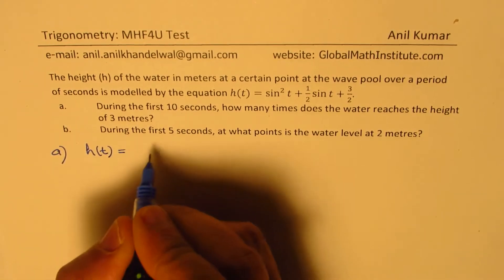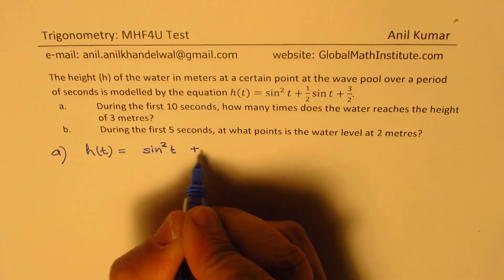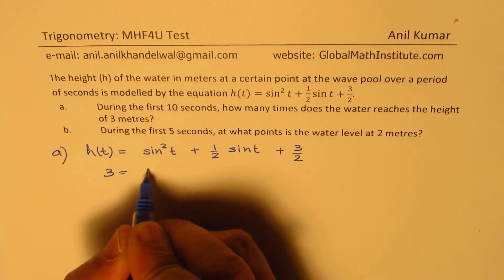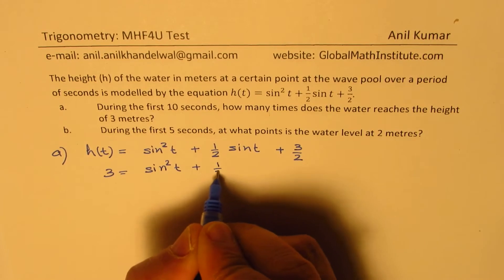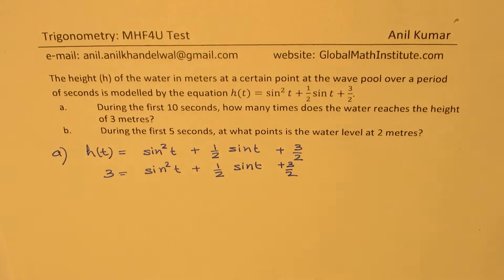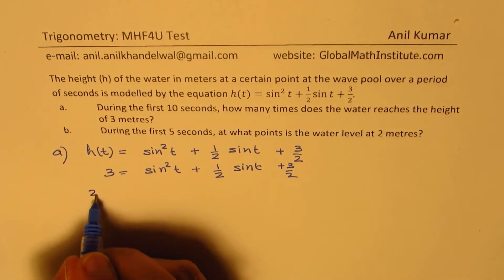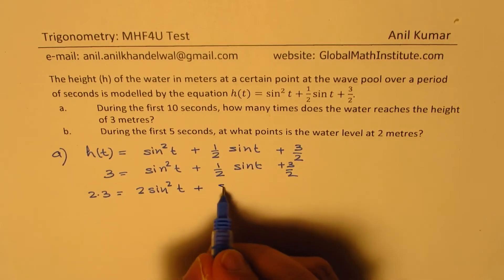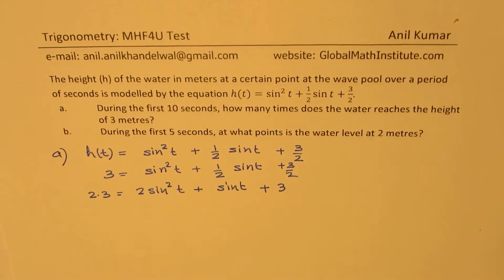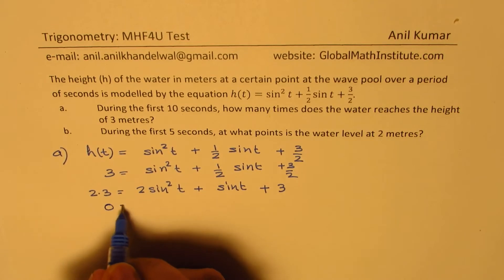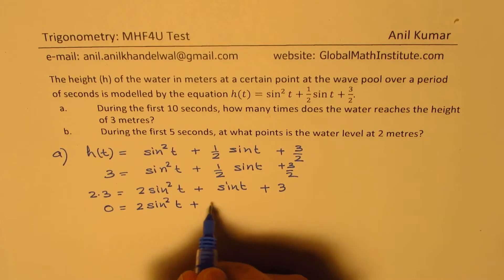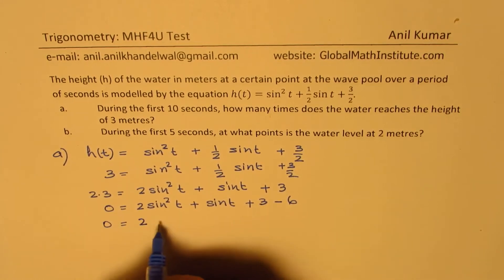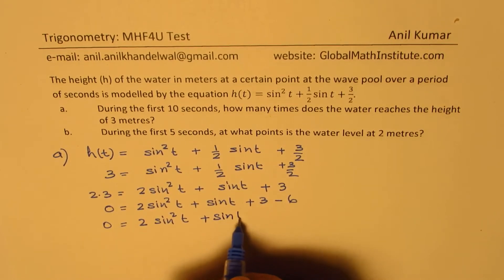The model given is h(t) = 2sin²(t) + ½sin(t) + 3/2. Substituting 3 for height, we get 3 = 2sin²(t) + ½sin(t) + 3/2. Multiplying all terms by 2, we get 6 = 4sin²(t) + sin(t) + 3... wait — we get 2×3 = 2×2sin²(t) + sin(t) + 3. Bringing 6 to the right side, we get 0 = 2sin²(t) + sin(t) + 3 − 6, which is 0 = 2sin²(t) + sin(t) − 3.